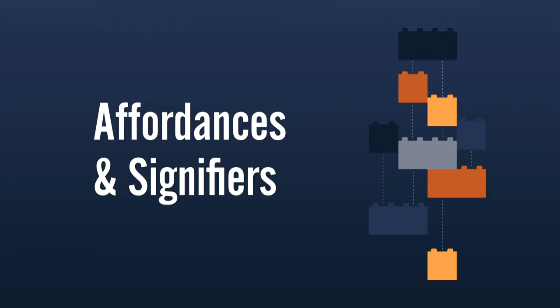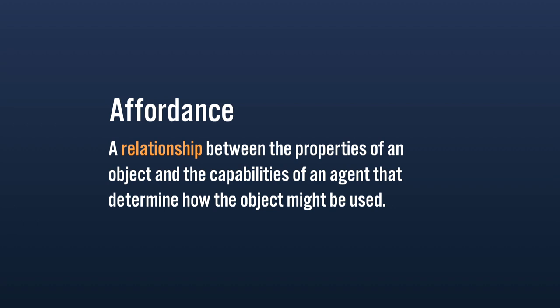Let's start with the building blocks of any user interface. I'm going to start with a couple dry definitions, but I think this is worth reinforcing. Talking about affordances and signifiers — a lot of you probably read The Design of Everyday Things by Don Norman and you might be familiar with these ideas, but as designers we tend to misuse the terms. Don Norman's definition is actually more abstract: an affordance is a relationship between the properties of an object and the capabilities of an agent that determines how the object might be used.